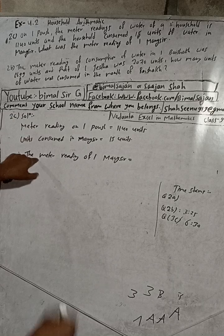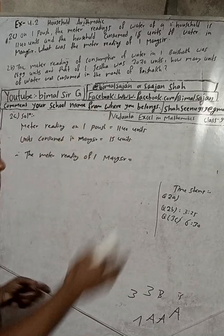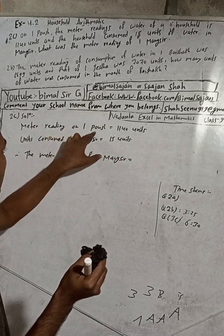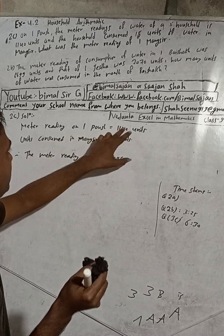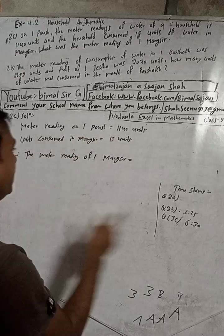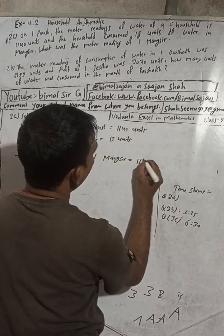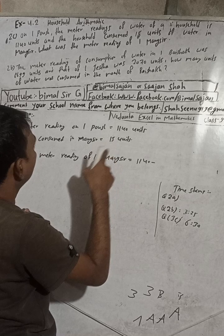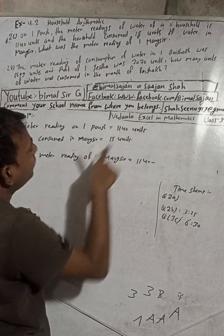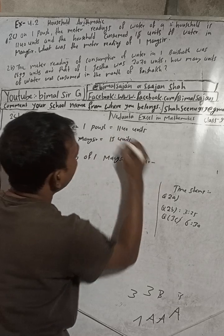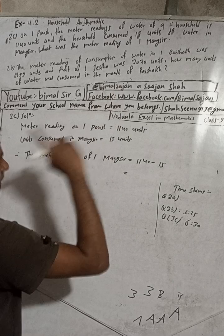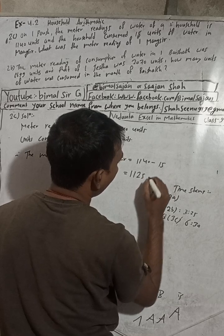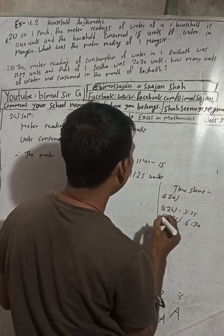What was the previous meter reading? The first Mangsir reading is given. The first Poush meter reading was 1140 and consumed was 15 units, so the meter reading of first Mangsir is equal to 1140 minus 15, which equals 1125. In the book the answer is 1124, so that is the calculation.